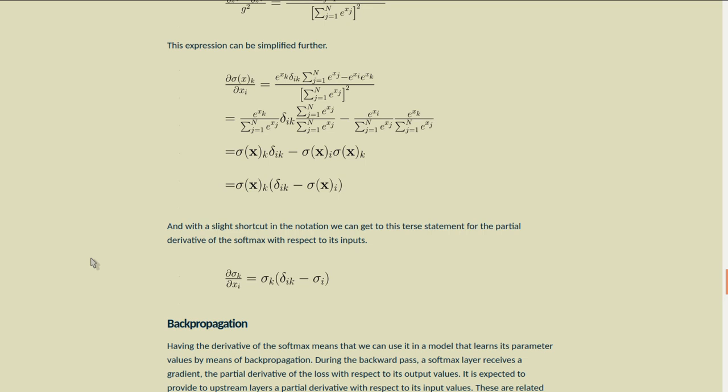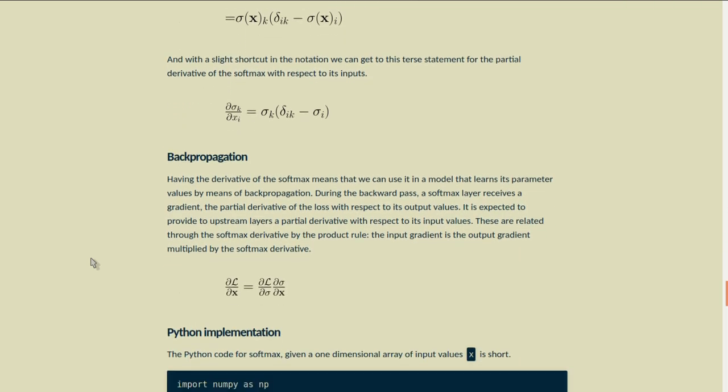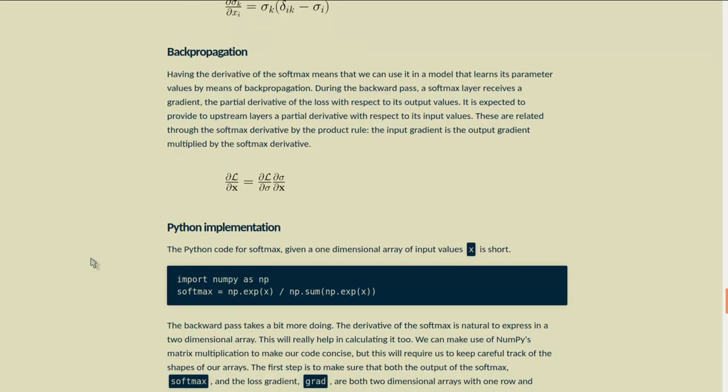So now we have a very concise representation of the softmax derivative. With a slight shortcut in the notation, we can get into this terse statement of the partial derivative of softmax with respect to its inputs. Having the derivative of the softmax means that we can use it in a model that learns its parameter values by means of backpropagation.